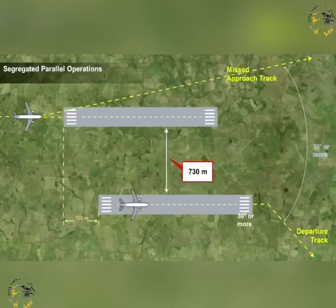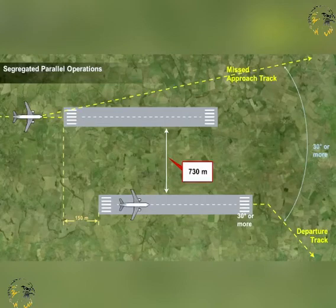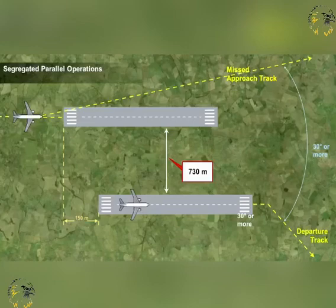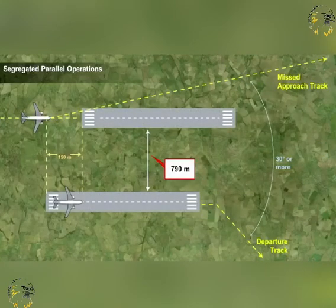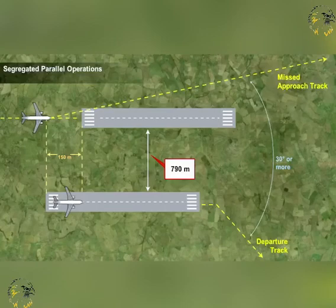This may be reduced by 30 meters for each 150 meters that the arrival runway is staggered towards the approach, subject to a minimum of 300 meters. It should increase by 30 meters for every 150 meters that the runway is staggered away from arriving aircraft.